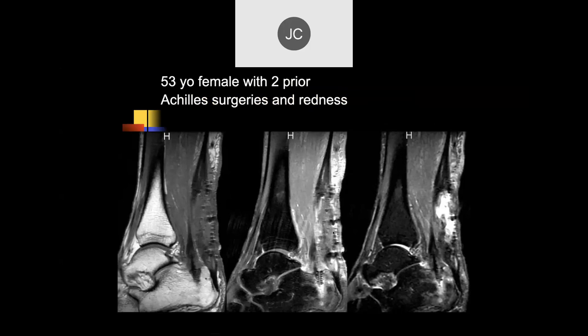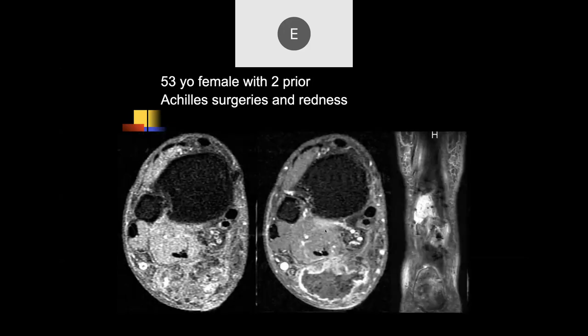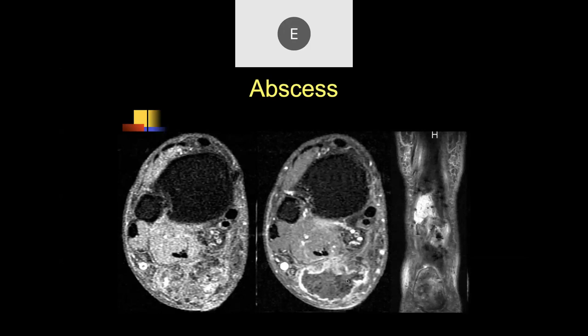A 53-year-old female with two prior Achilles surgeries and redness. There's a susceptibility artifact in the posterior soft tissues — surgical material — and a defect in the native Achilles tendon. There's a surgical screw in the calcaneus, maybe from a flexor hallucis longus transfer, and some edema in the calcaneus. On post-contrast imaging, there's a ring-enhancing fluid collection posteriorly where the tendon should be — this was all infected, a big abscess.